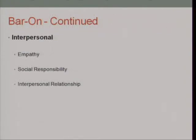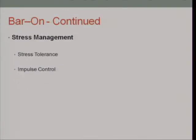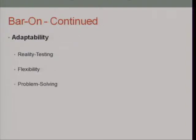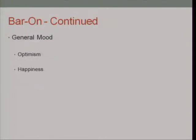In terms of the interpersonal domain, it looks at empathy, social responsibility, and interpersonal relationships. For stress management, it examines stress tolerance and impulse control — how much can they regulate themselves in a moment of stress and conflict. It also looks at adaptability: reality testing, flexibility, and problem-solving ability. Finally, it looks at the general mood of the individual — level of optimism and general level of happiness.